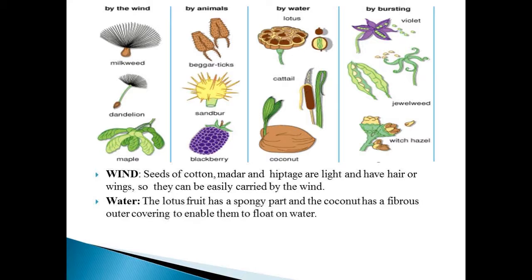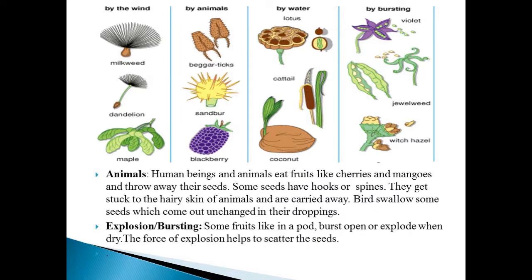By animals: Human beings and animals eat fruits like cherries and mangoes and throw away their seeds. Some seeds have hooks and spines that get stuck into the hairy skin of animals and are carried away. Animals also swallow some seeds, which come out unchanged in their droppings.